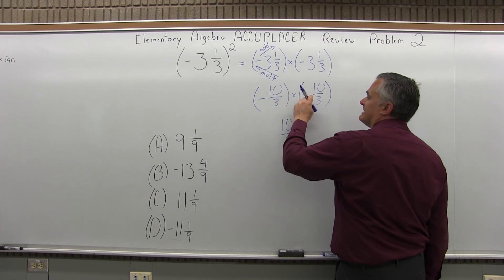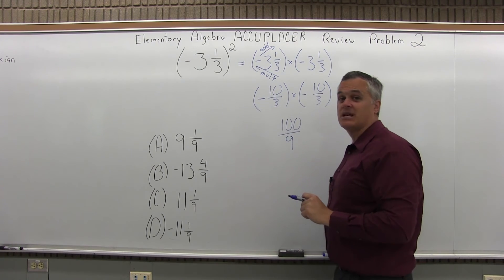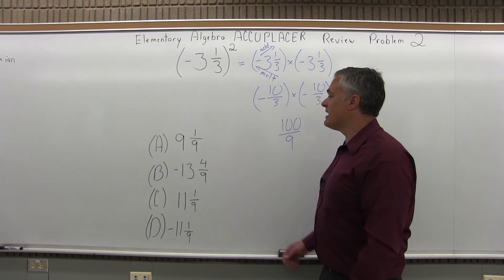Now, in terms of the signs, negative times negative, the negatives cancel. We have a positive. So, I have positive 100 ninths.